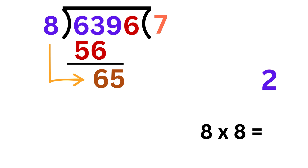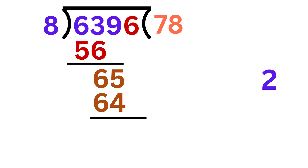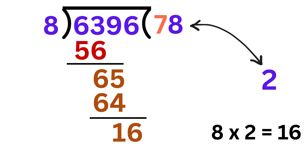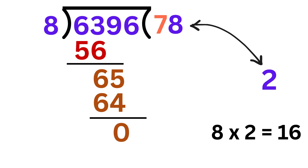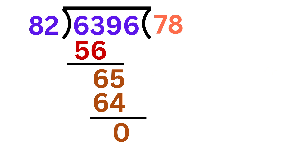Now 8 times 8 is 64, so write 8 here and 64 here. Our remainder will be 65 minus 64 or 1. Then bring 6 here to get 16. Also 8 times 2 is 16, and thus subtract 16 from 16 to get 0, which means we are done, because we have used our last value and we got a 0. So the answer to this question is 78.